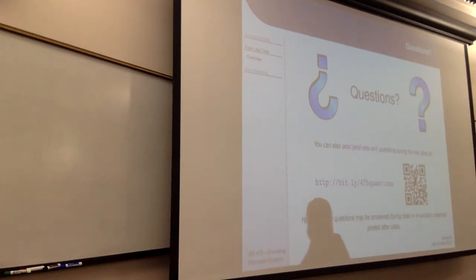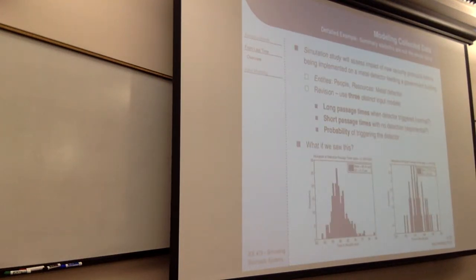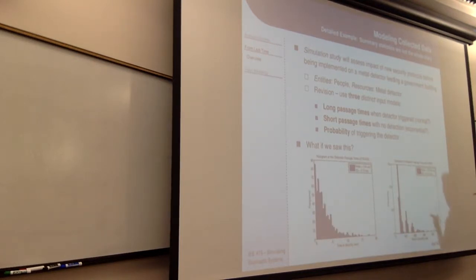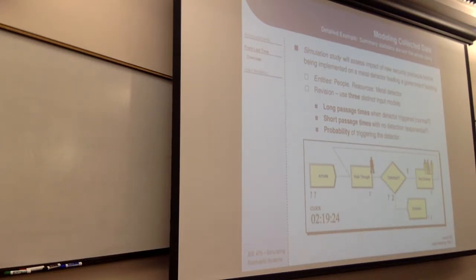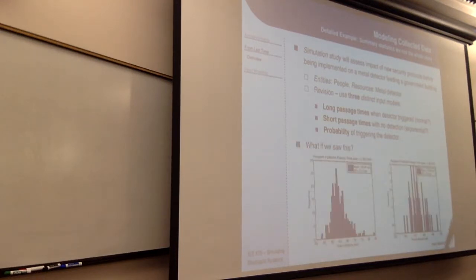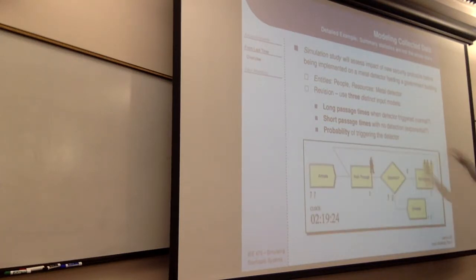A student asks whether the histograms were historical data or simulation output. The instructor explains: for this example, the model was built first, data were taken out of that model, and then the story was told the other way around. In principle these data could have been from a real system, and you'd then build the model, run it, and check whether it generates something similar. If it doesn't, you know you're missing something.